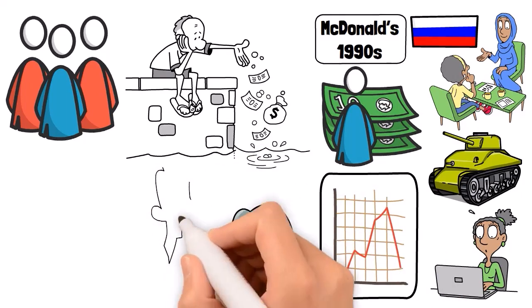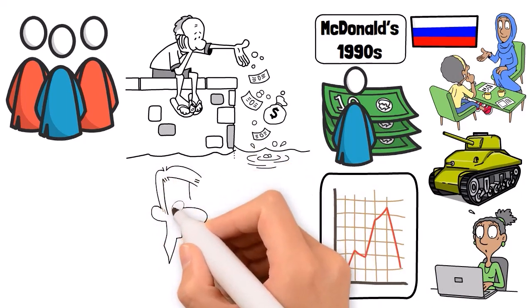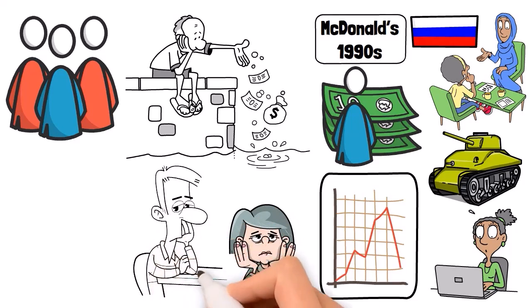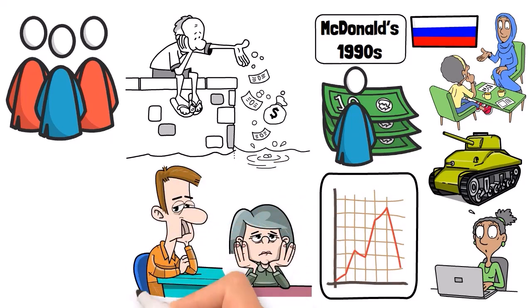Looking five years ahead, the landscape appears bleak. The Russian economy could lose human capital at a rate higher than in the 1990s, with significant brain drain and a potential backslide to an economy reminiscent of those turbulent times.